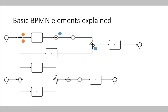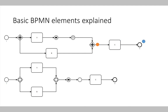The blue tokens move along our process. What we notice is that at the parallel join gateway, the token from the lower part of the process waits until the token from the upper part arrives. Once all tokens from the different process paths arrive at the join gateway, they are joined together and the process continues with just one token. Activity C is executed, and the process ends with the end event O, where our process token is consumed.